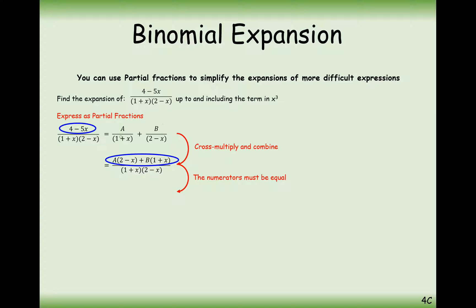If we try and put these right-hand fractions together, we get A brackets 2 minus x plus B brackets 1 plus x on the numerator, and now the fractions are equal, so we can set the numerators equal to each other.